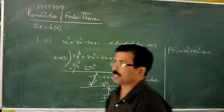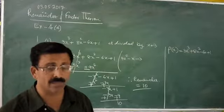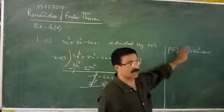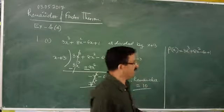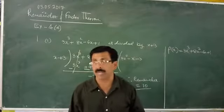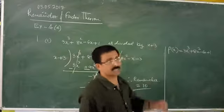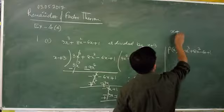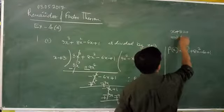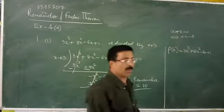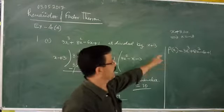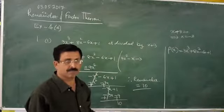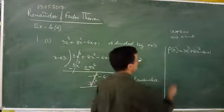Now we look at the alternative method used in class 11. We write the dividend in functional form as P(x). From the divisor x + 3, we get the value of x by setting it equal to 0, giving x = −3.